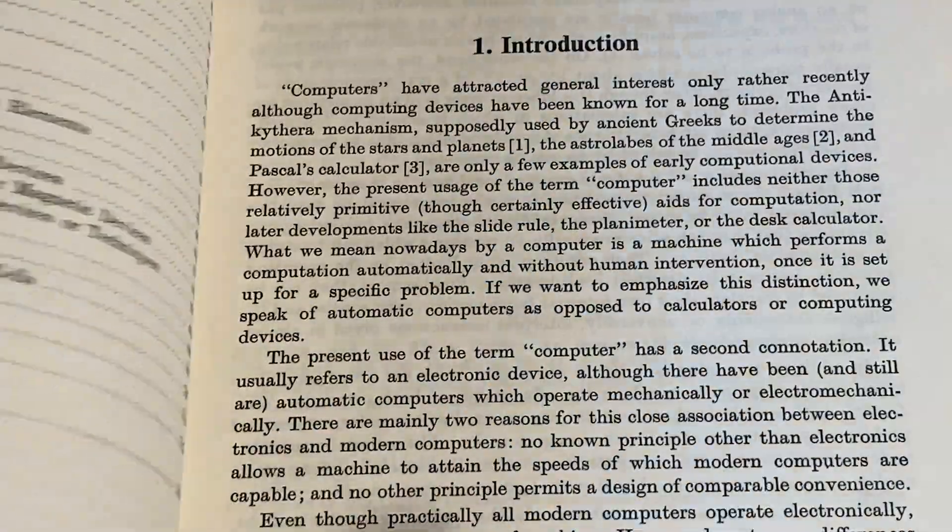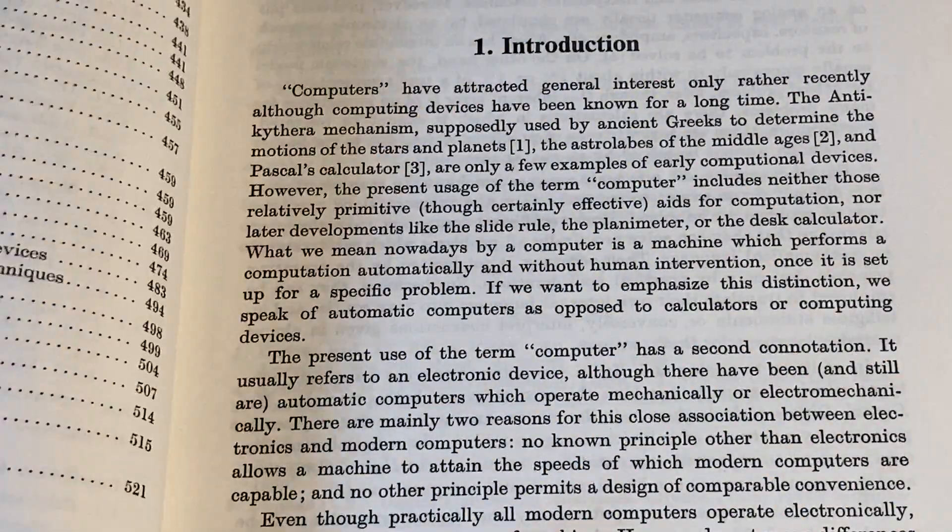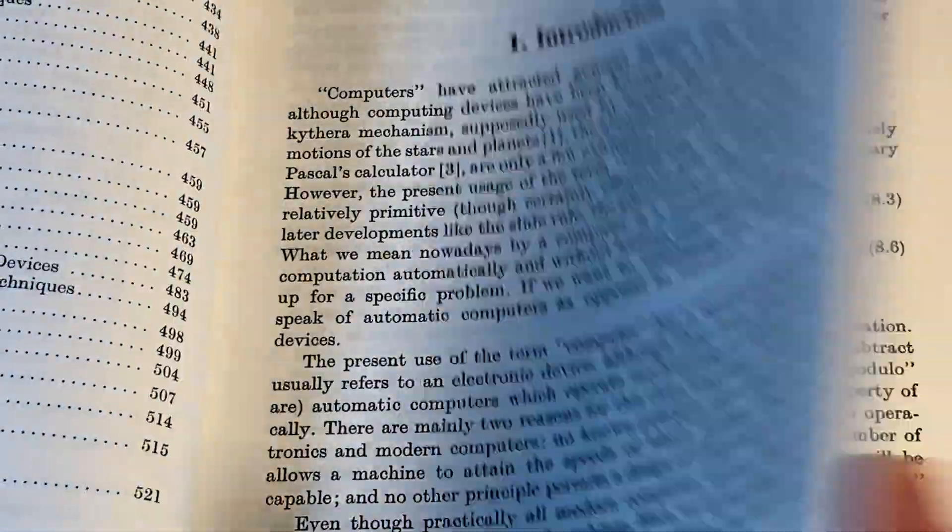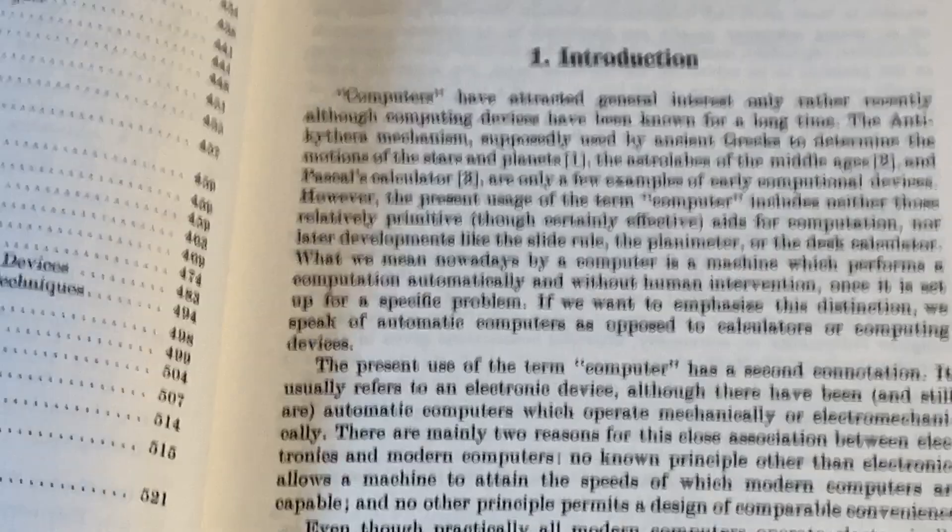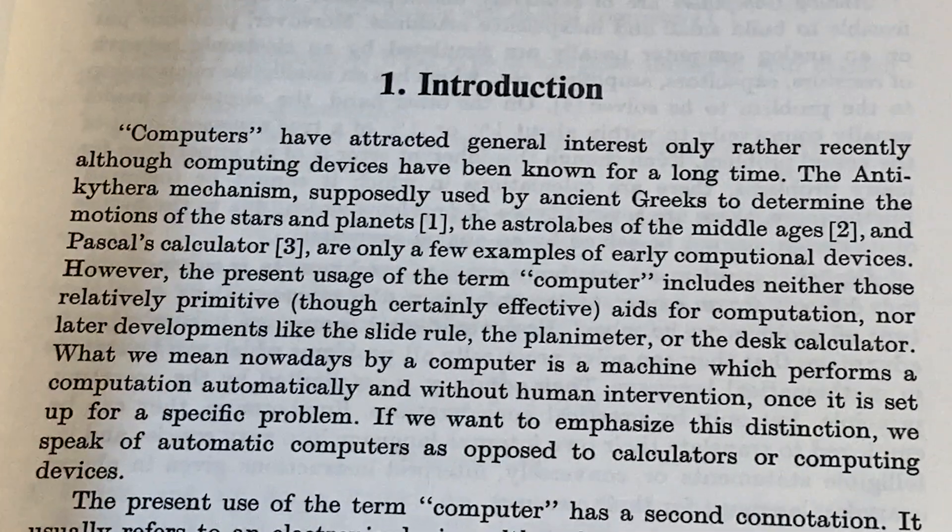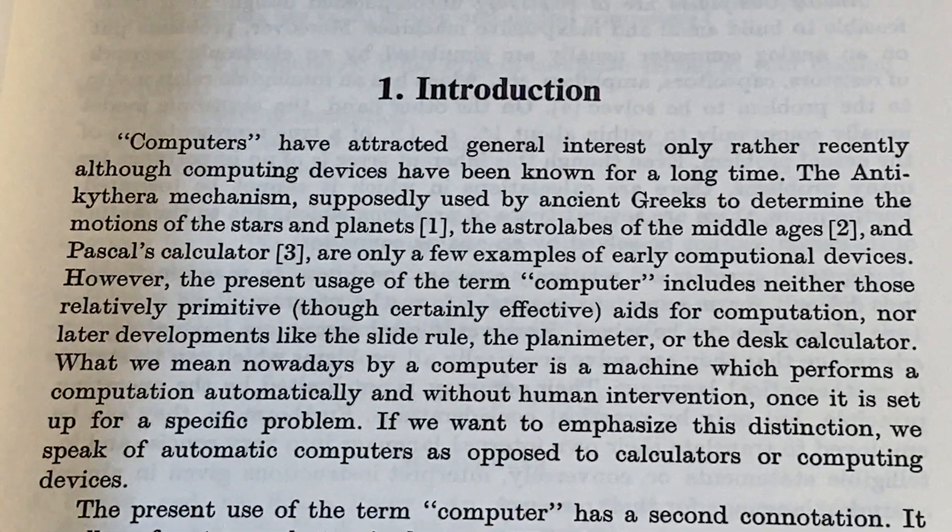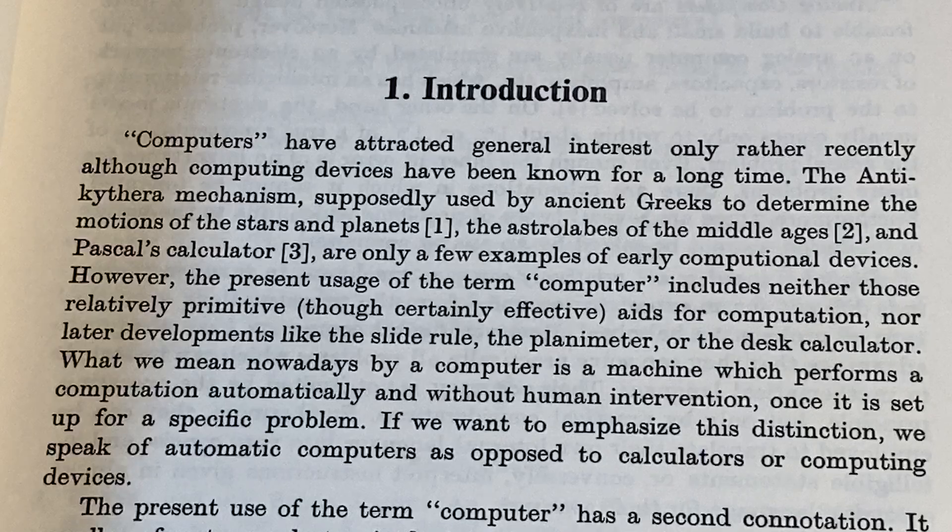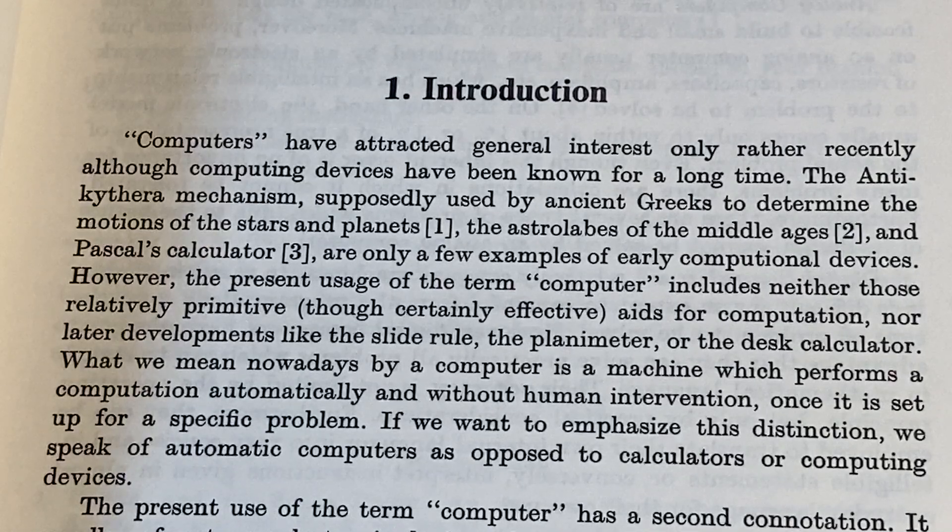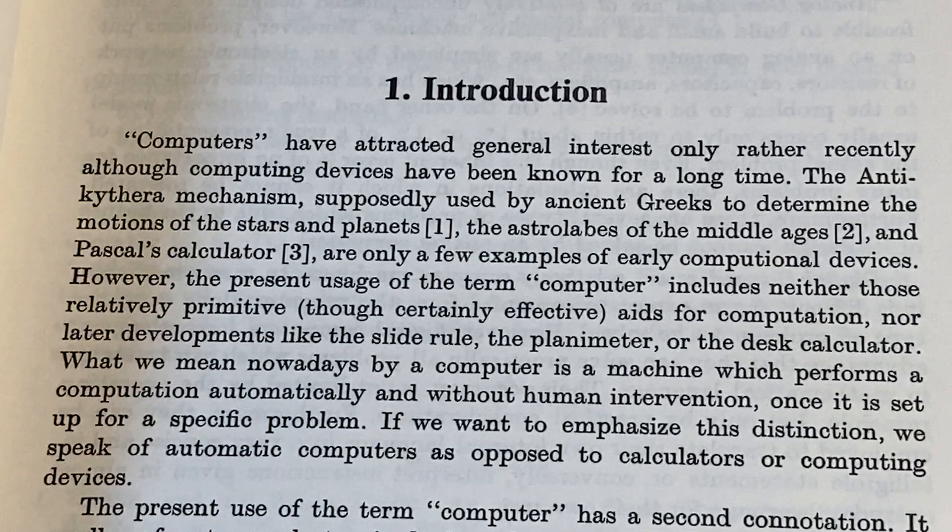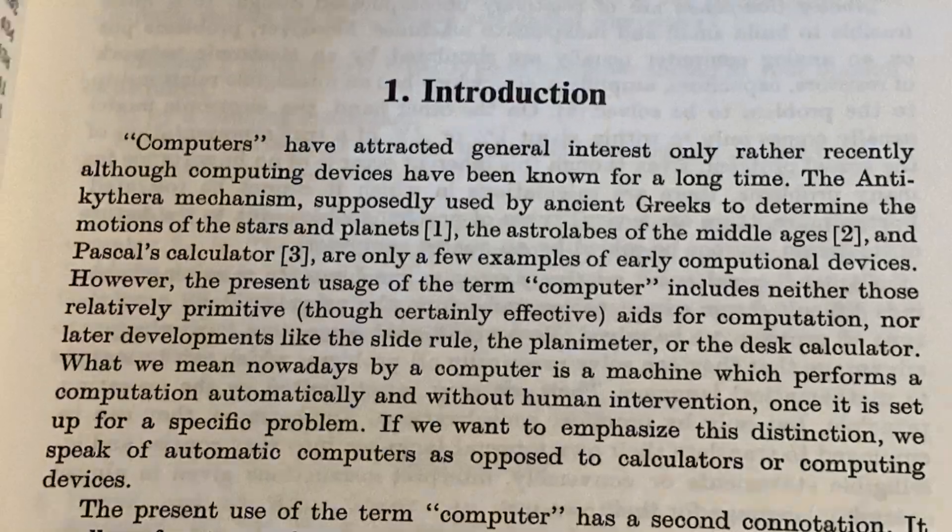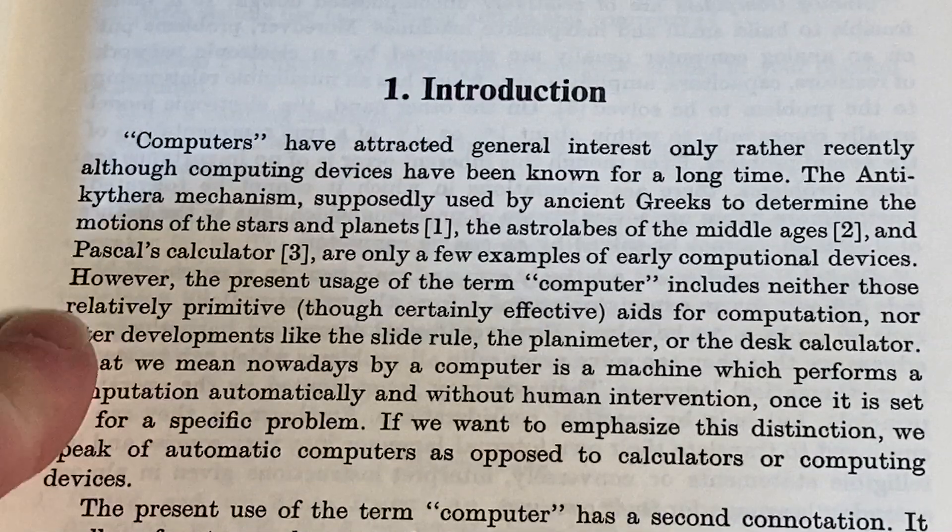And again, the copyright on this is 1967, so keep that in mind as you're reading it. Very old school stuff. Let's see what it says here. Computers have attracted general interest only rather recently, although computing devices have been known for a long time. The Antikythera mechanism supposedly used by ancient Greeks to determine the motions of the stars and planets,